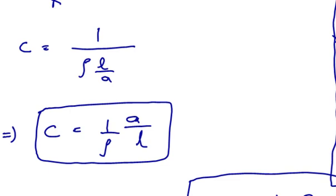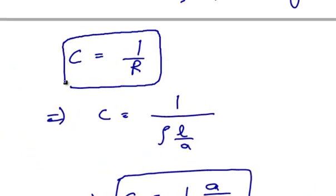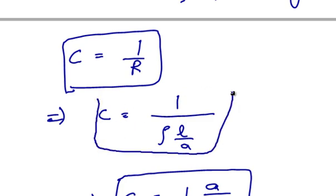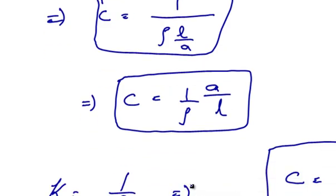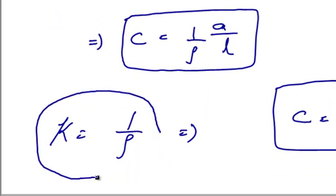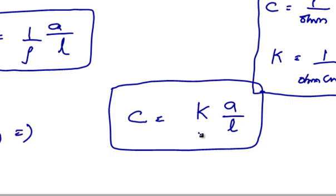Coming to the conductance: conductance is equal to 1 by resistance, that is conductance is the inverse of resistance. Where resistance opposes the flow of electrons, conductance allows the flow of electrons. So conductance C can be rewritten as C is equal to 1 by rho into L by A, that is C is equal to 1 by rho into A by L. Here K is equal to the proportionality constant 1 by rho, that is K is the specific conductance or conductivity. So C is equal to K into A by L.